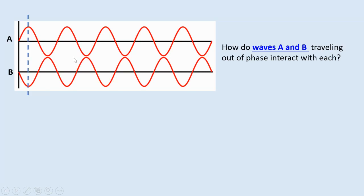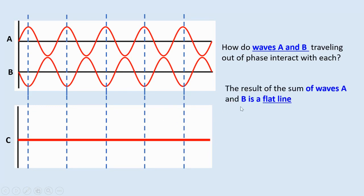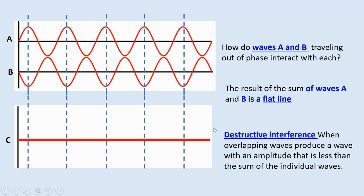We connect crest with trough, extend the line, and add the vertical displacements. The amplitude of one wave is positive, and the amplitude of the other is negative — same magnitude, opposite direction. When we add them, we get zero. Wave C becomes a flat line: every single point cancels the other. The result of the sum of waves A and B is a flat line. This is destructive interference: when overlapping waves produce a wave with an amplitude less than the sum of the individual waves — in this case, zero because it is a perfect out of phase.